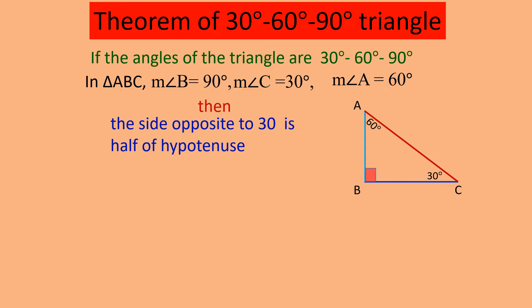The side opposite to 30 degrees — you can see in the figure — is AB, which is half of the hypotenuse. So we can write down AB equals half of AC. The side opposite to 30 degrees is half of the hypotenuse.